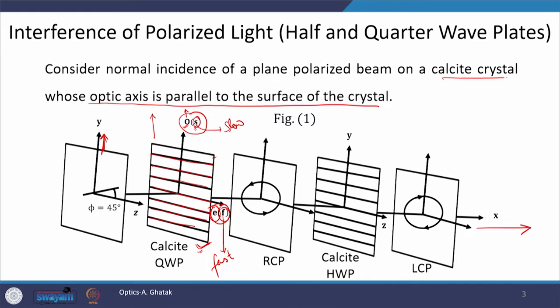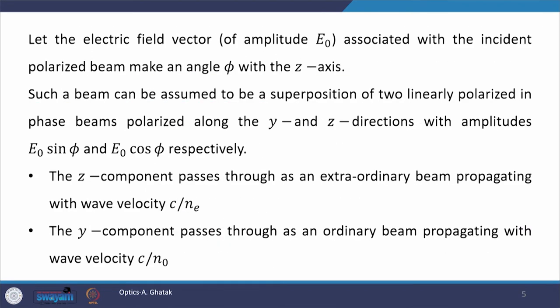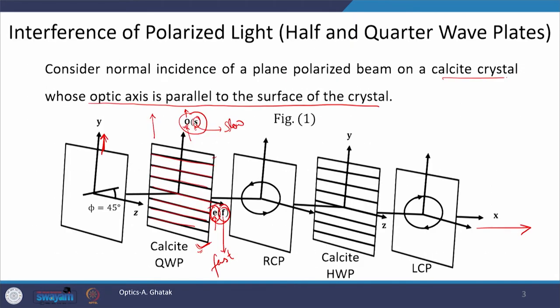Because the calcite crystal is a negative crystal, the extraordinary ray travels faster. If a ray is polarized along the z direction, it will only support the E wave and therefore that direction is fast. Now, let the electric field of amplitude E₀ be incident, polarized in such a way that it makes an angle φ with the z-axis, as shown in the figure.